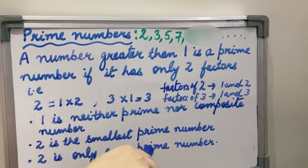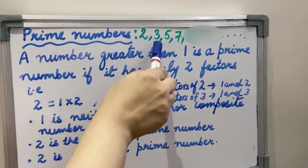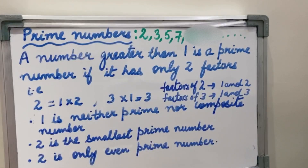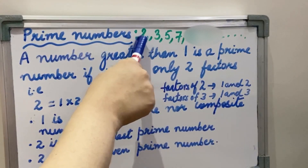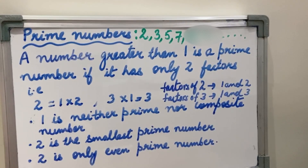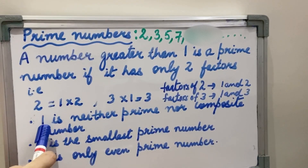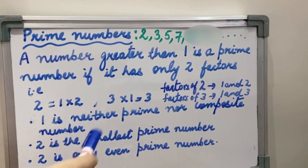2 is the only even Prime Number because this number is divisible by 2, so it is an even number and also a Prime Number. The rest of the numbers are not divisible by 2, so they are not even numbers. Only 2 is an even number, so it is the only even Prime Number and it is the smallest Prime Number. Prime Numbers have only 2 factors: 1 and the number itself. Any Composite Number we can write as a product of Prime Numbers — that's why they have some special power.